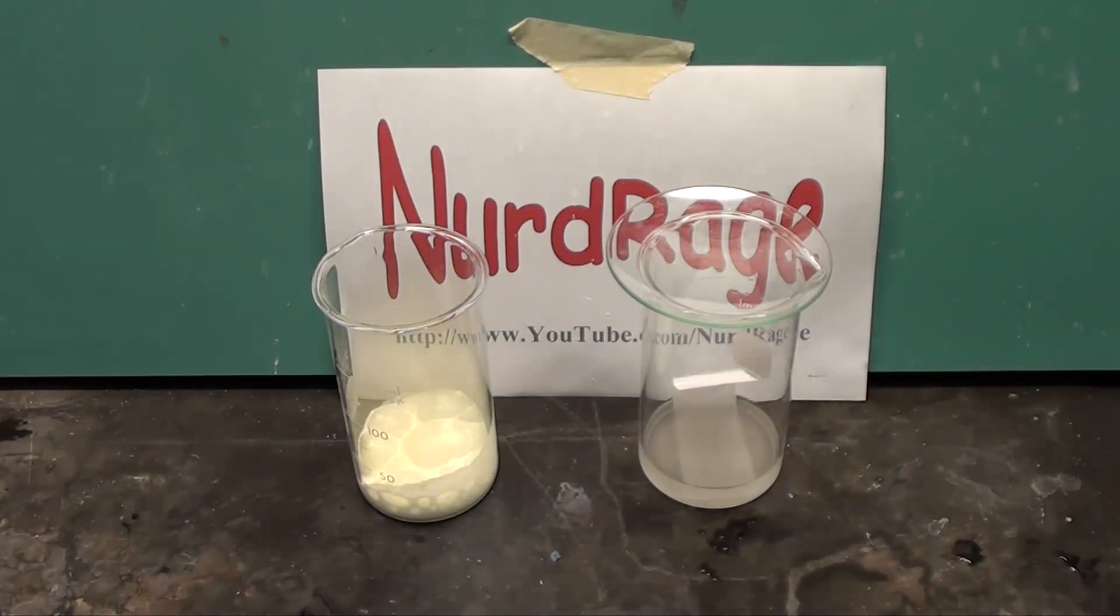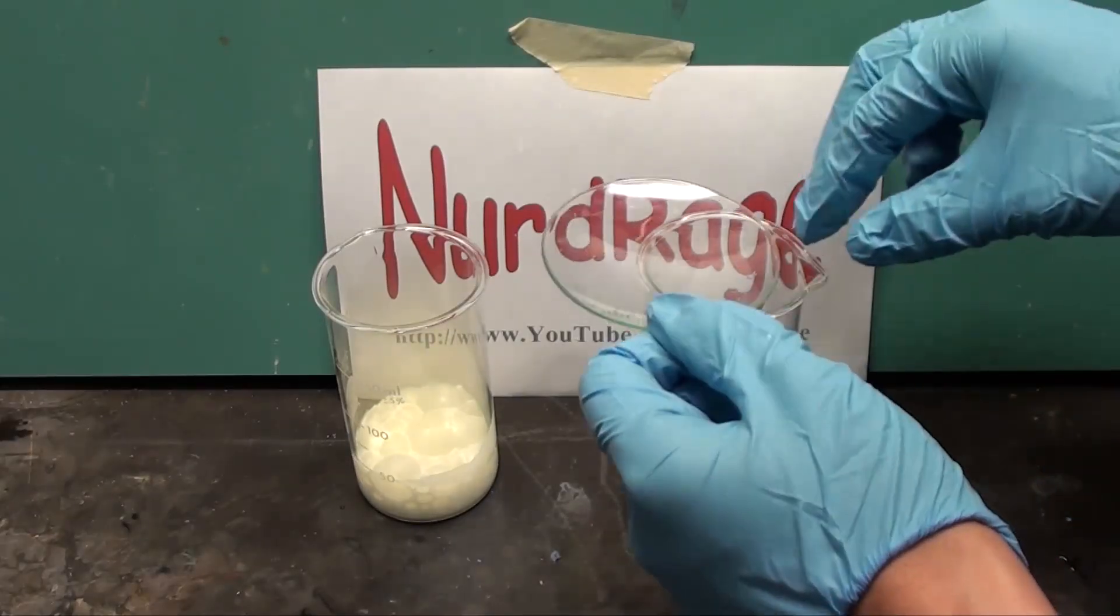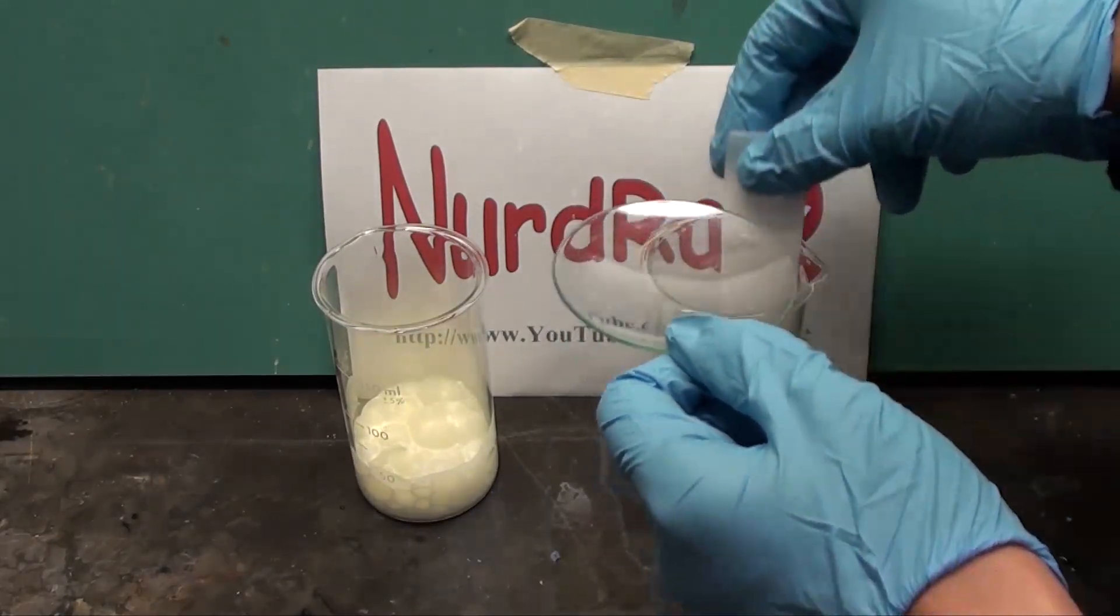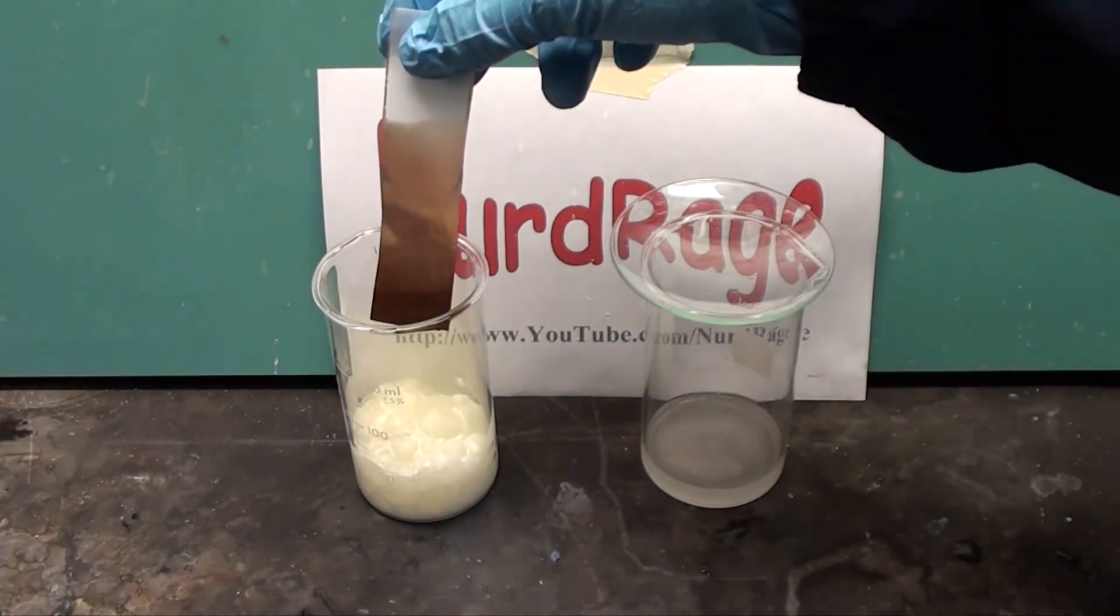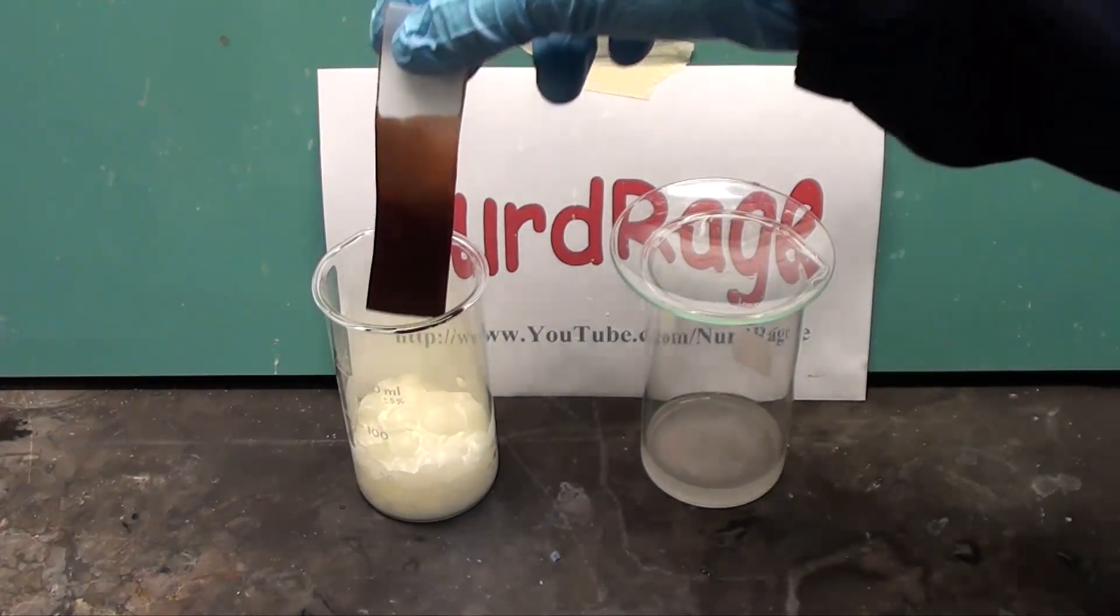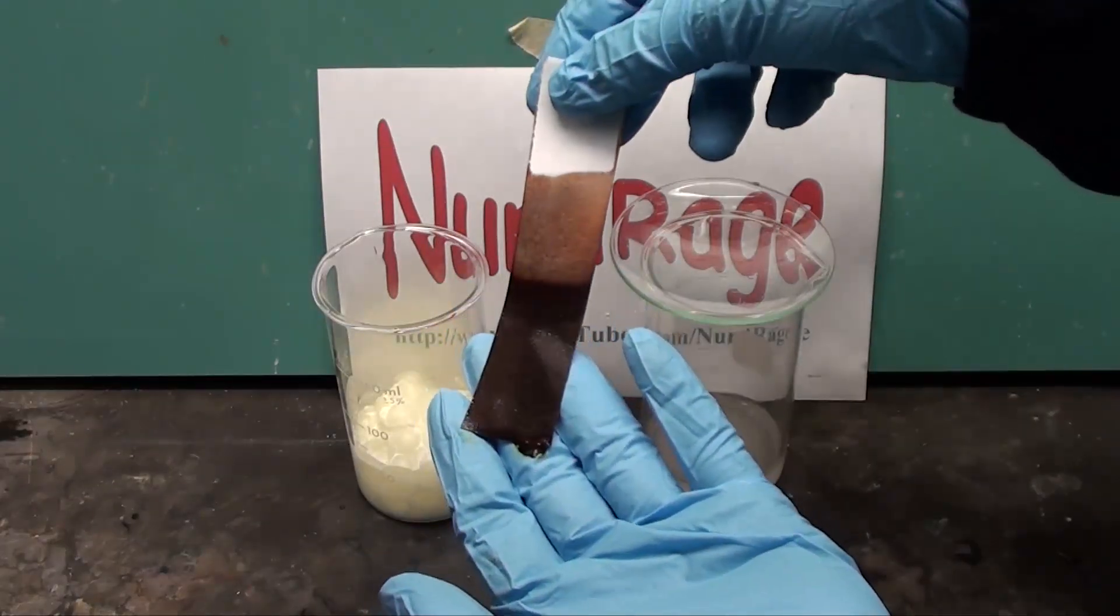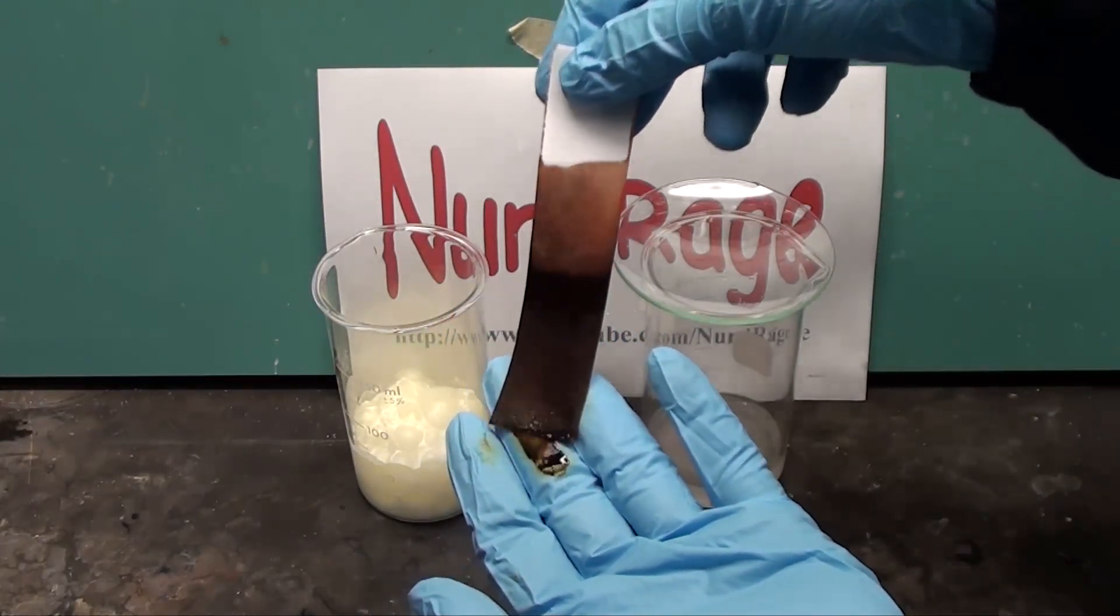You can clearly see the chlorine gas above the mixture. Chlorine is denser than air and most of it will just sit there. Now I'll get the strip and dip it into the chlorine gas. As you can see the chlorine quickly converts the iodide into triiodide that the starch detects as this dark blue or brown color.